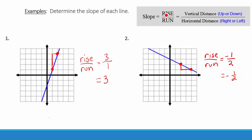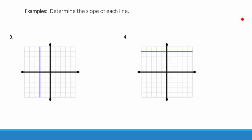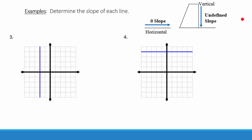Remember slope is the rise over the run — the vertical up-and-down distance divided by the horizontal right-or-left distance. Determine the slopes of each line. A perfectly horizontal line has a slope of 0 and a perfectly vertical line has a slope that is undefined. In number 3, the line is perfectly vertical, so the slope is undefined. In number 4, we have a perfectly horizontal line, so the slope is 0.